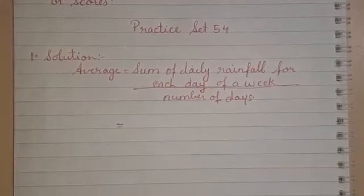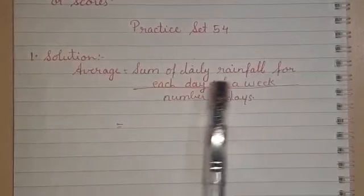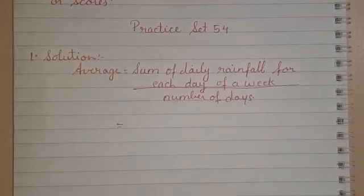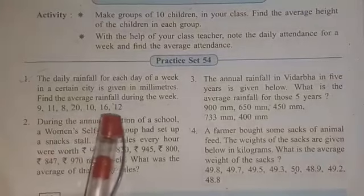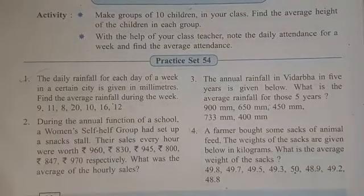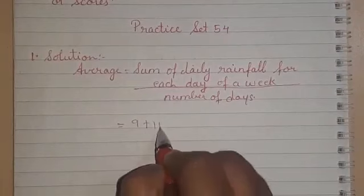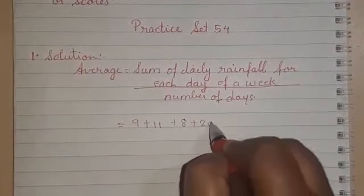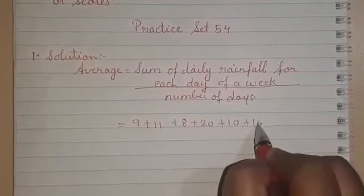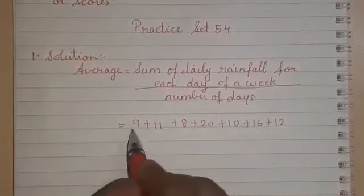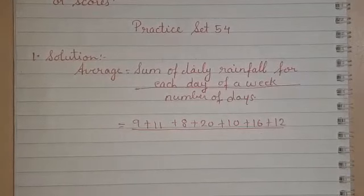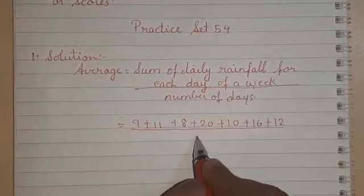Now let's see how to write the solution. Average is equals to sum of daily rainfall for each day of a week upon number of days. So the rainfall in millimeters for every day they have given in the question — all those numbers we are going to add. So: 9 plus 11 plus 8 plus 20 plus 10 plus 16 plus 12, upon number of days. How many days are there in one week? Correct, 7.